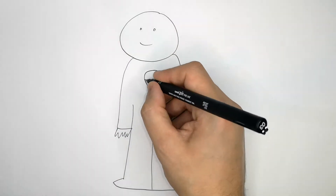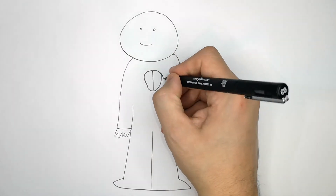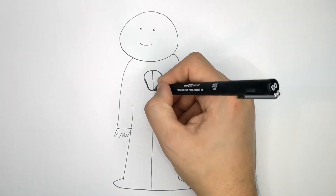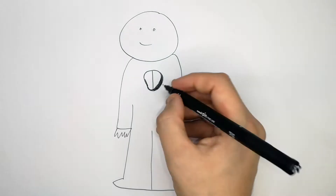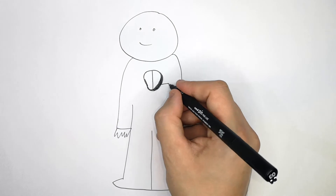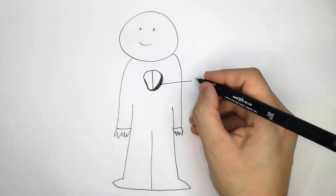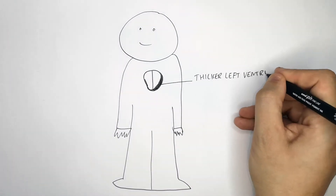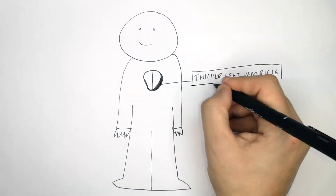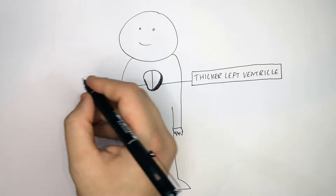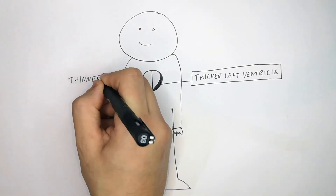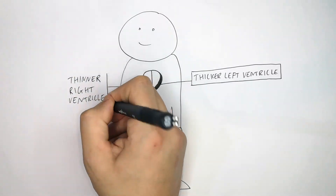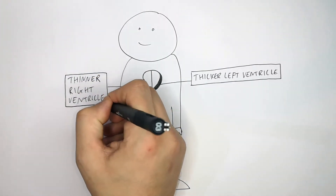I'm drawing the heart here, showing the left ventricle wall and the right ventricle wall. The muscle of the left ventricle is thicker, whereas there is a thinner right ventricle on the right ventricle of the heart.